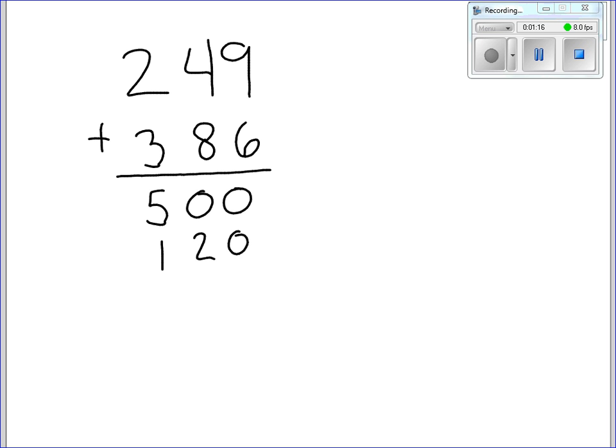And then I'm adding nine plus six in the ones place. Nine plus six is 15. My final step in the show all totals method is to just add these three numbers up. So zero plus zero plus five is five. Two plus one is three. And five plus one is six. So my answer to 249 plus 386 is 635.